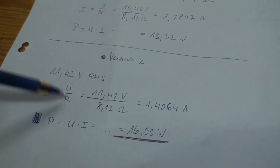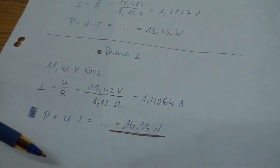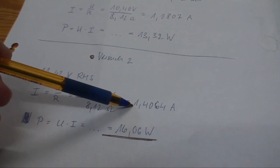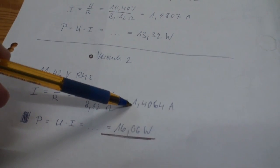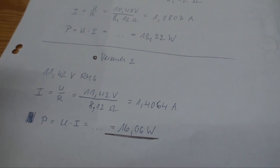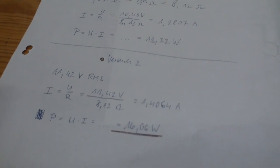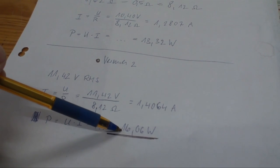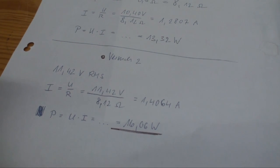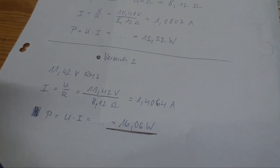Current is voltage divided by resistance. So, put our true RMS voltage reading into there. That's, of course, our load resistor, 8.12 ohms. That gives us a current of 1.4064 amps. That's quite a lot for such a small little chip. You always got to keep that in mind. Now, our power equals voltage times current, and that gives us 16.06 watts. That is our output power. Continuous output power, RMS power, whatever you want to call it.